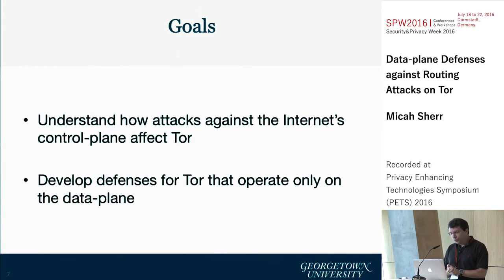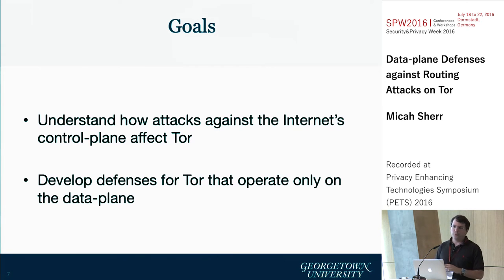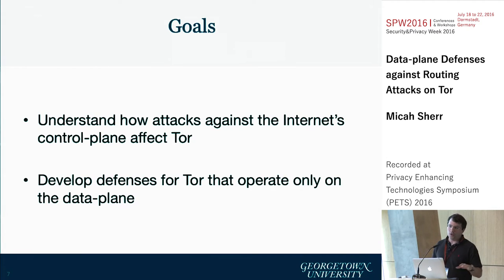The goals in this work are to understand how attacks against the internet's control plane affect TOR, and to develop defenses for TOR that operate only at the data plane. We assume that TOR wants to use this technique and isn't going to receive a lot of cooperation, since the relays are not operated by autonomous systems — they're operated by volunteers.